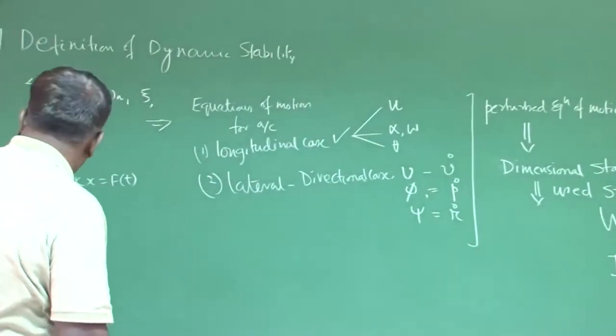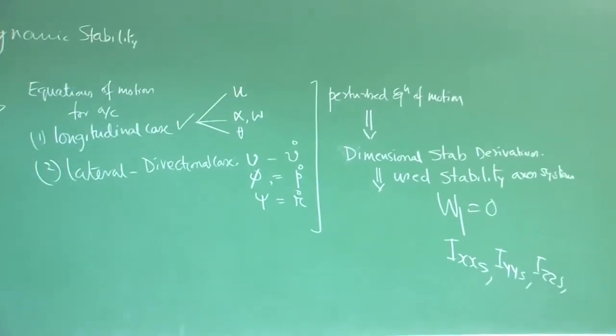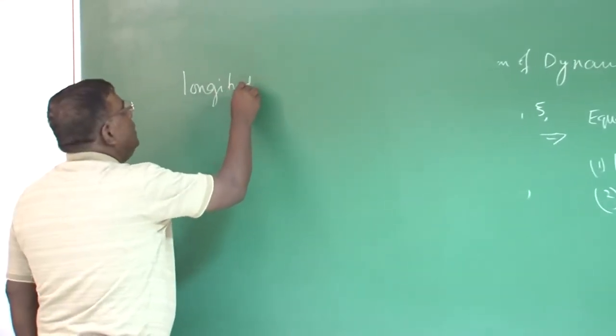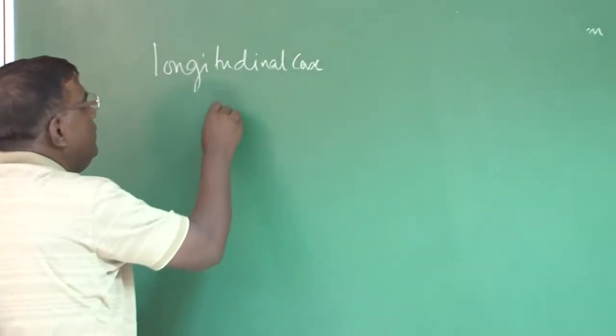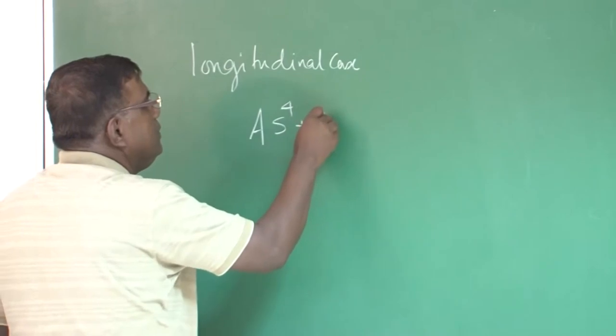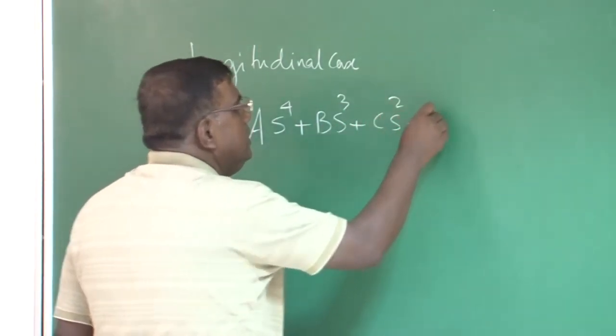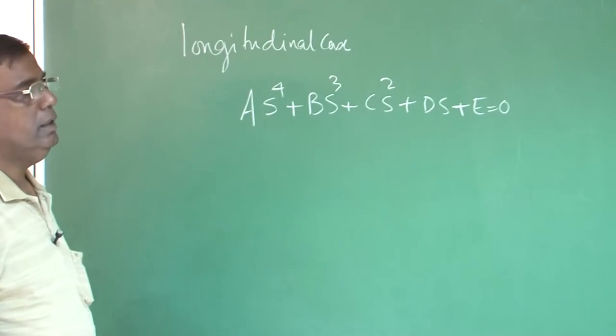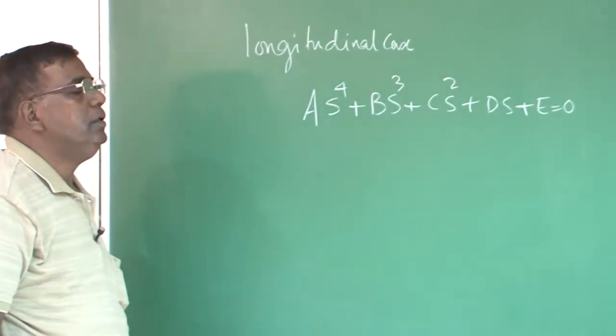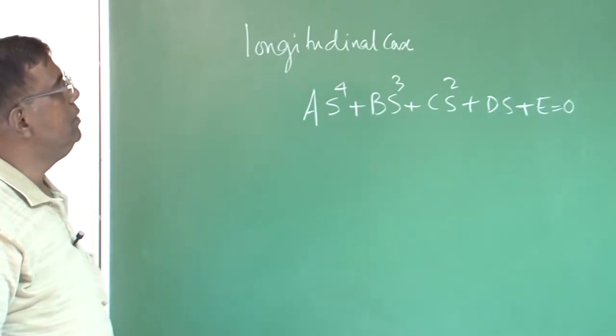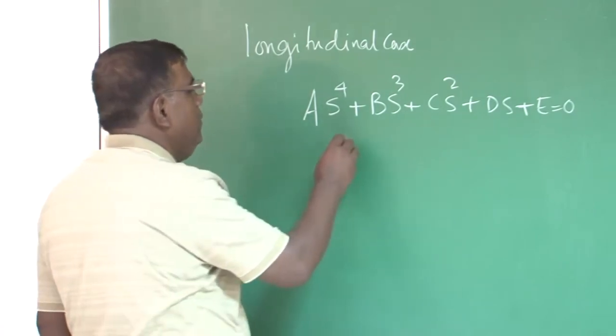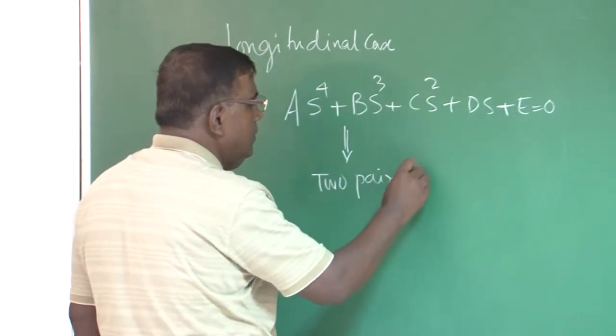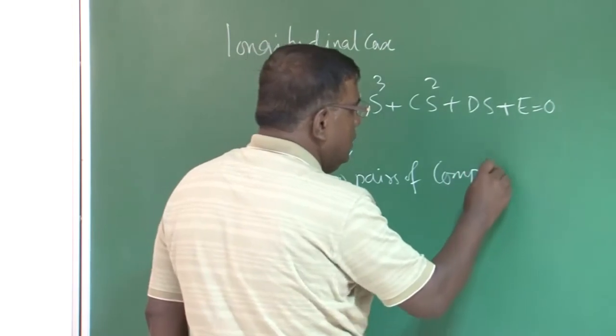Once we have done this, then we found that if I take a longitudinal case, we get equation of the form as^4 plus bs^3 plus cs^2 plus ds plus e equal to zero. And a, b, c, d, e, they have the expressions based on the stability derivatives, inertia properties. More important thing here is, for most of the airplane, we found this generates for longitudinal case two pairs of complex conjugates.